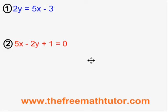I have the equations 2y equals 5x minus 3 and 5x minus 2y plus 1 equals 0. To do comparison, I want to use algebra to isolate one of the variables in both equations, and I choose to isolate y in both of these equations.